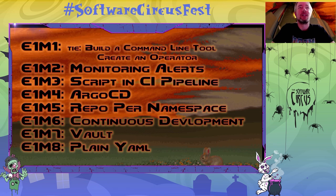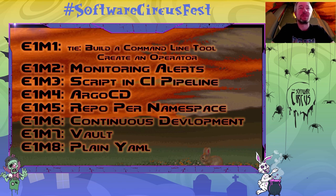Third is using a script in a pipeline to commit from the CI pipeline to the GitOps repo. So people like the simple solutions instead of an API server. ArgoCD wins as favorite GitOps tool — very cool. Then repo per namespace is the most popular one. I like that because that's my favorite one too, and I've been told by a lot of people that they don't like that, so I'm glad that today it wins.